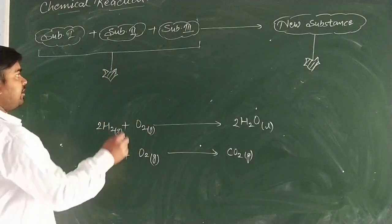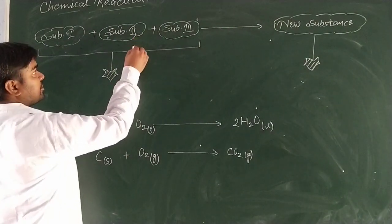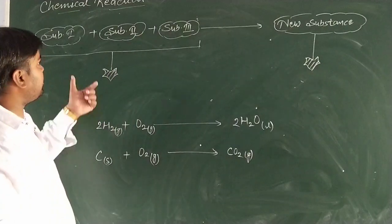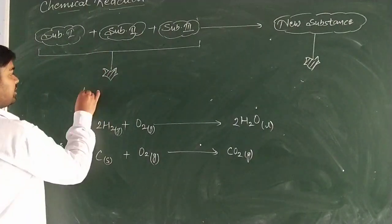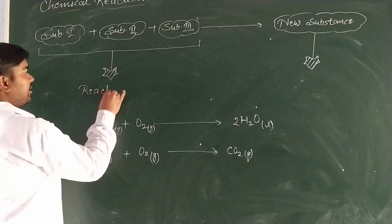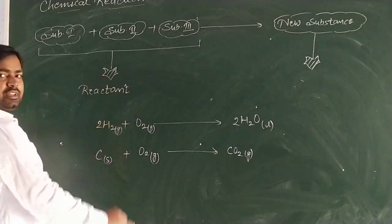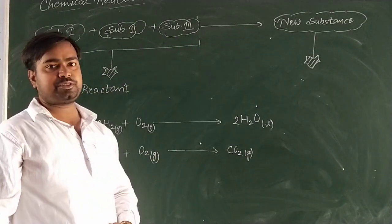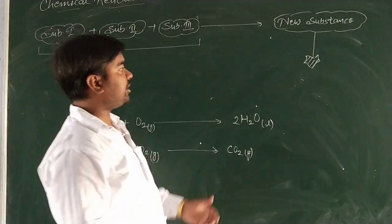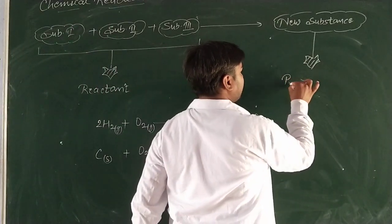Now you should always know, the substances which are participated in chemical reaction, that is called reactant. And new substances which are formed from a reaction, that is called product.